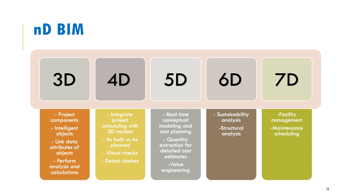BIM covers several dimensions. In 3D BIM, you have a model that includes all objects and components of your project, linked to data attributes such as costs and material types, enabling structural and sustainability analysis. In 4D BIM, the 3D model is linked to a construction schedule, adding the time aspect, which allows you to simulate construction progression.